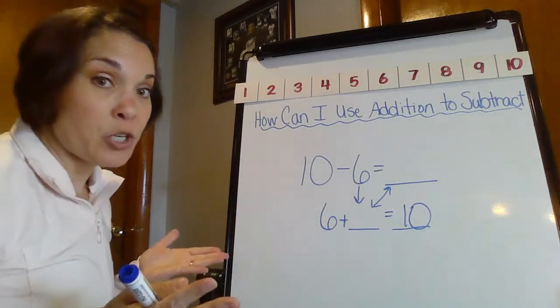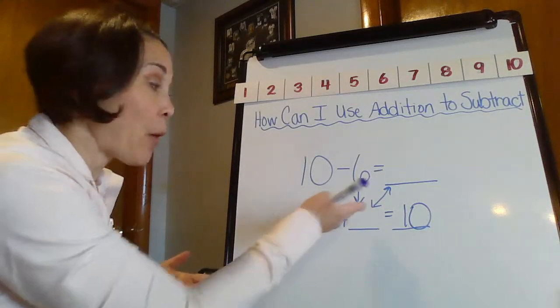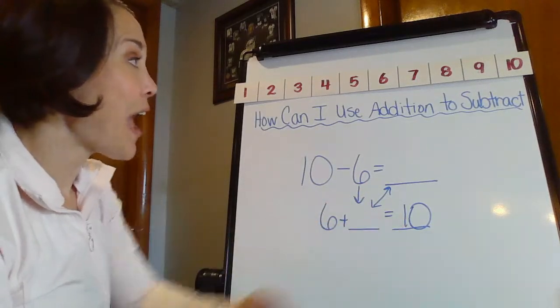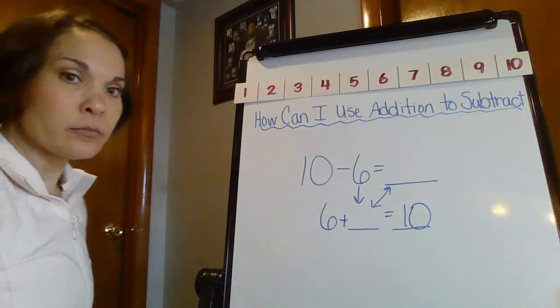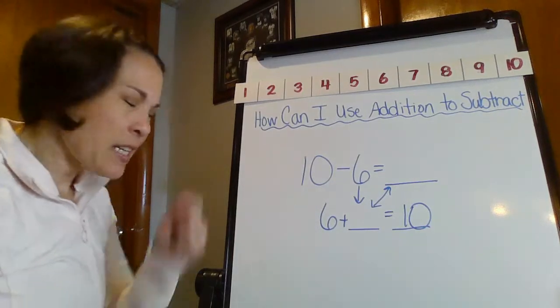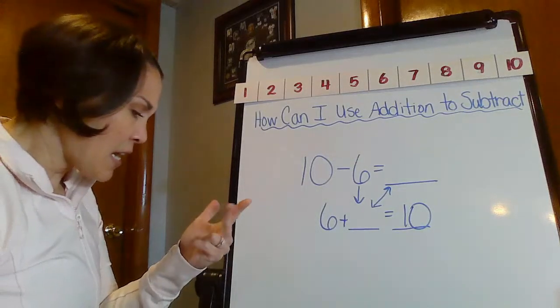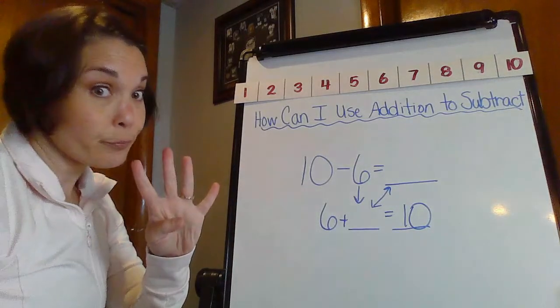So now let's remember, whatever I figure out here is going to be my answer right here. So what did we do? What was our strategy in order to figure out what that missing part was, this missing addend here? 6 plus what equals 10? Well, we can count on. 6 in my brain and I want to count up to 10: 6, 7, 8, 9, 10. There's that 4.